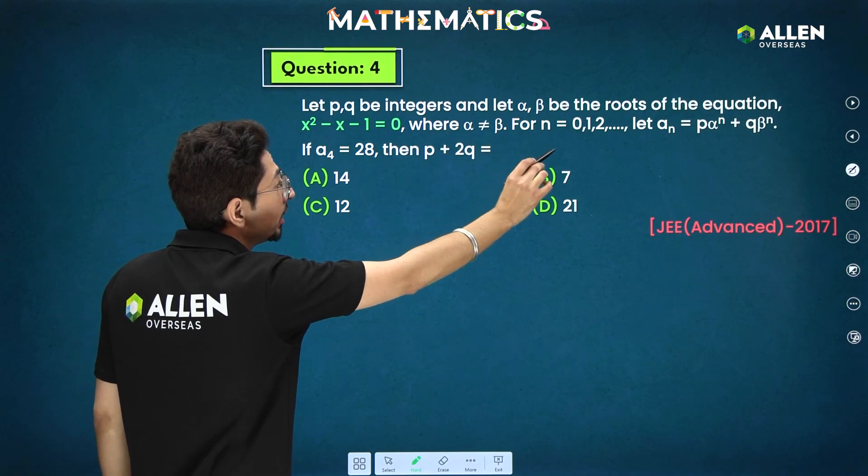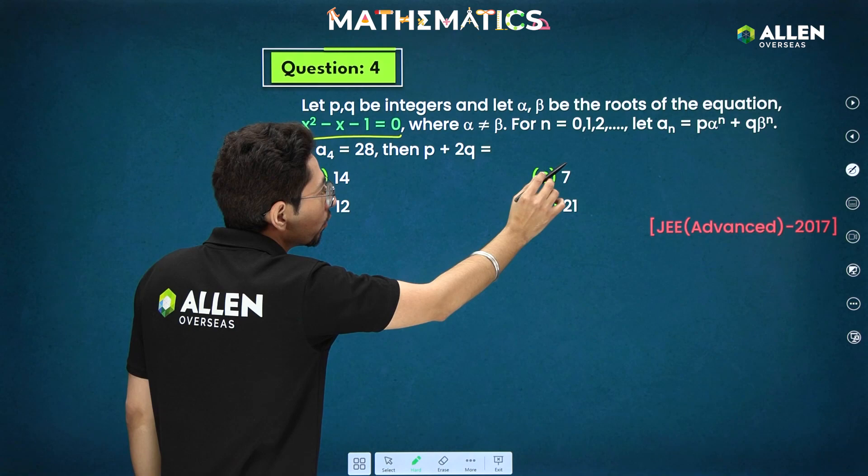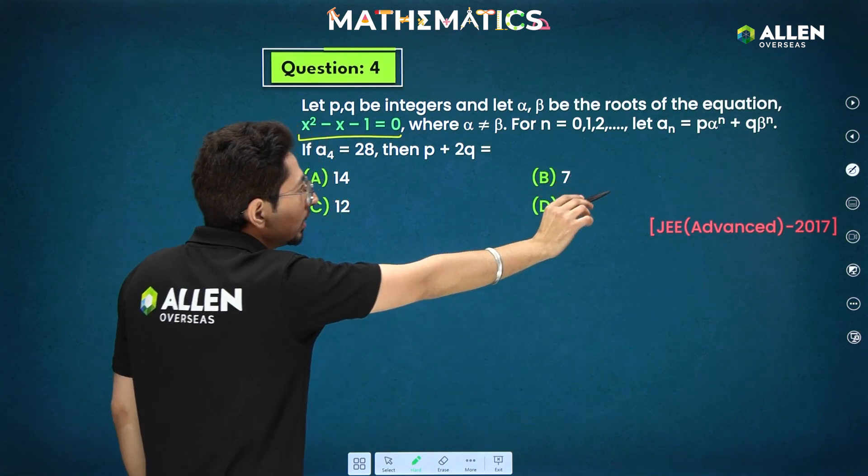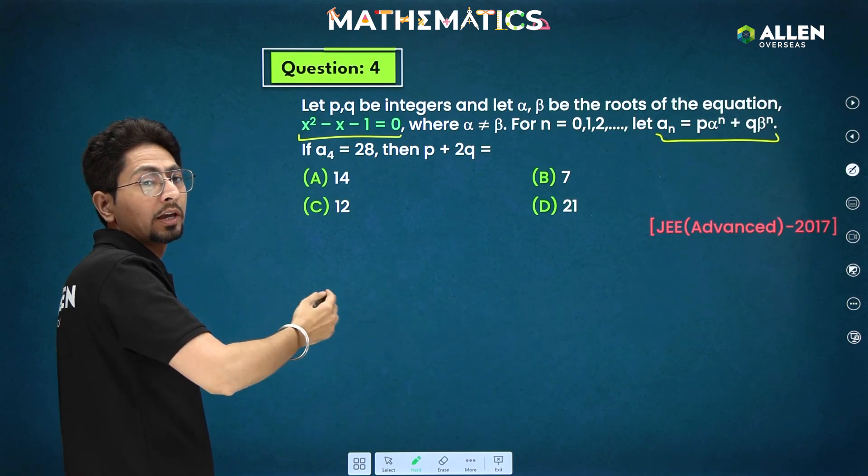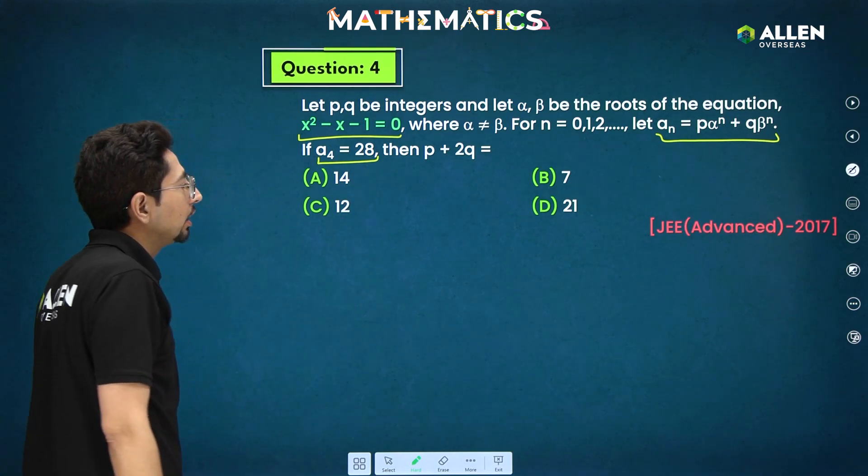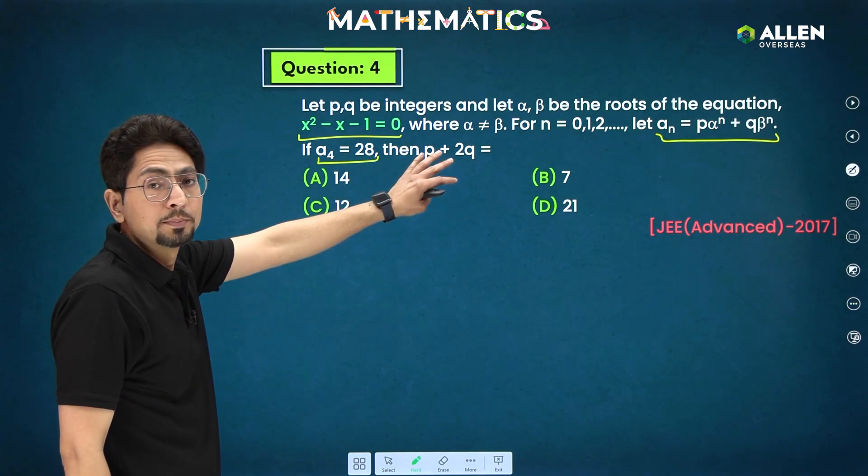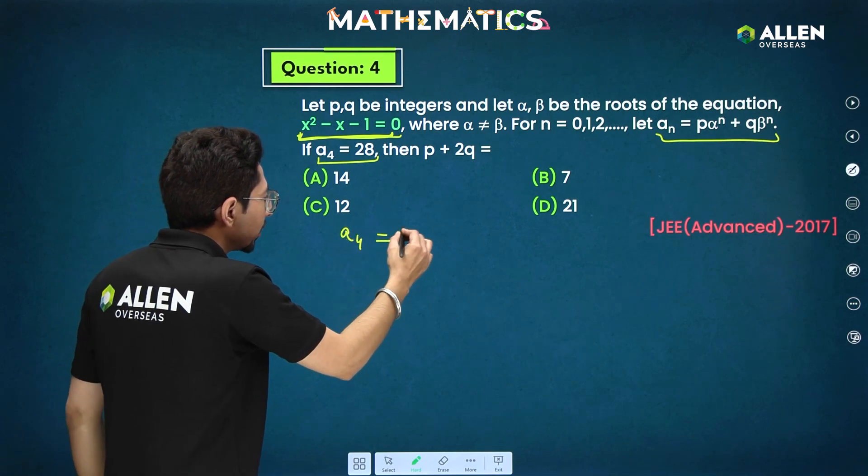Let pq be integers and let alpha beta be the roots of the equation. Where alpha not equal beta for n = 0, 1, 2. Let an be this is given to us. Now, so according to this we can directly apply Newton's theorem. What will be that? For a4 we have been given 28. And we have to find value of p plus 2q. a4 is 28.